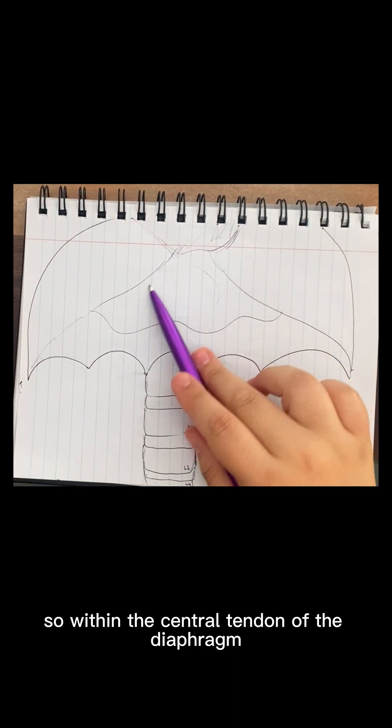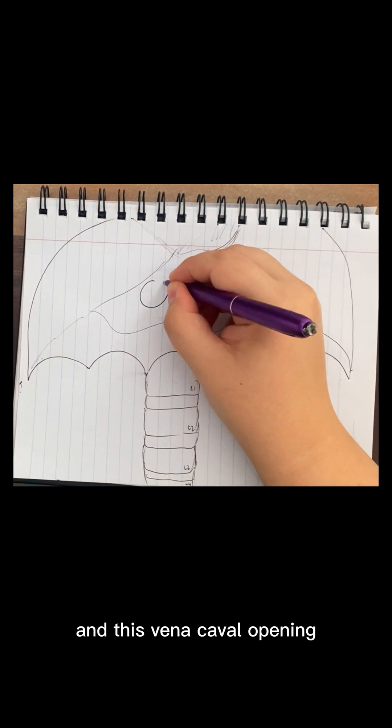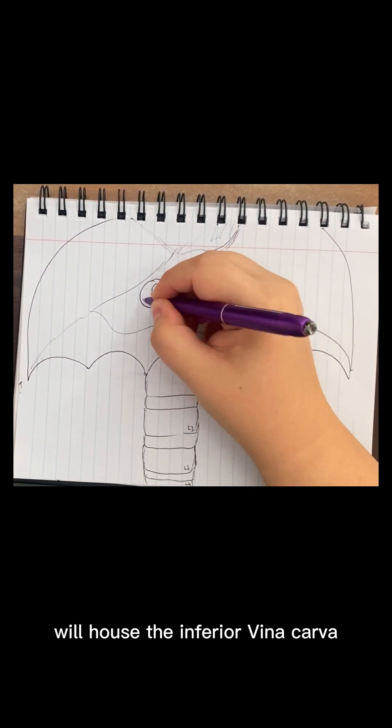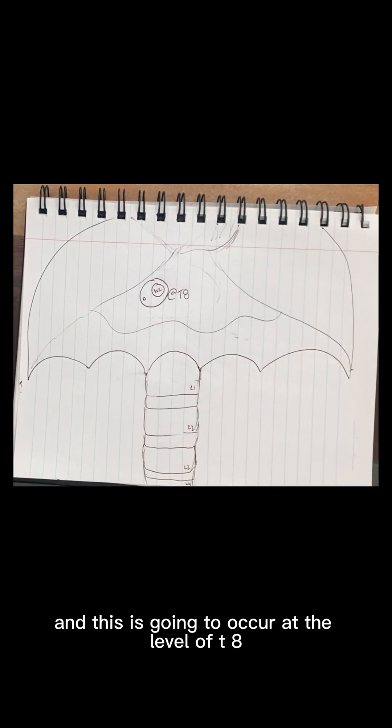So within the central tendon of the diaphragm, we have the vena caval opening. And this vena caval opening will house the inferior vena cava plus the right phrenic nerve. And this is going to occur at the level of T8.